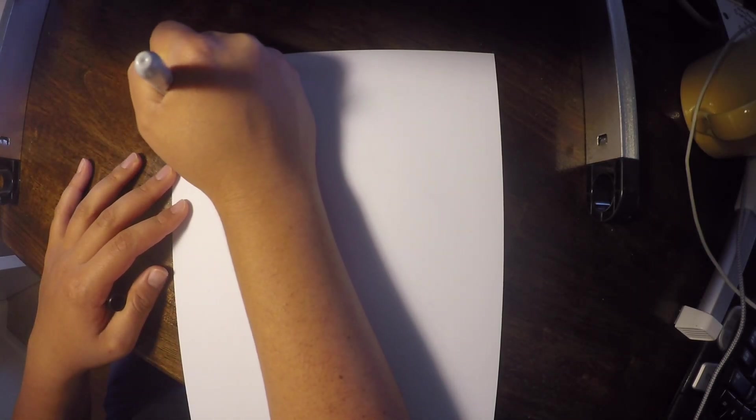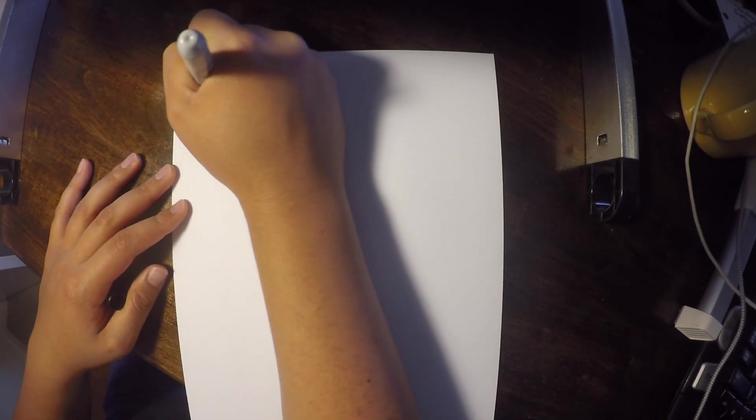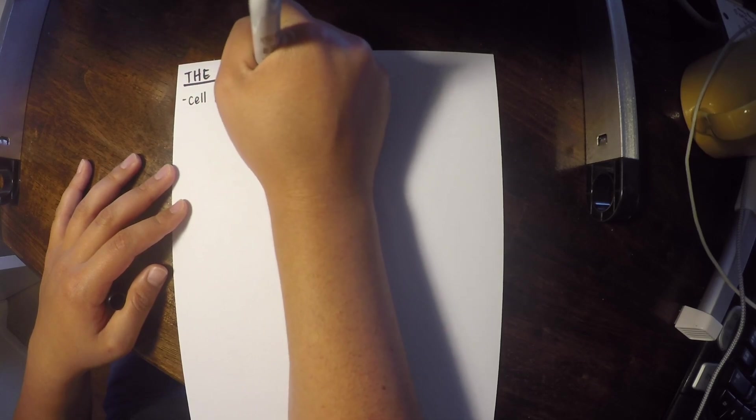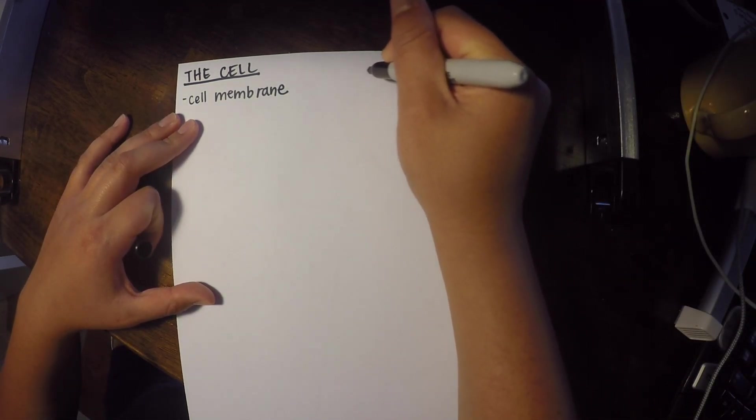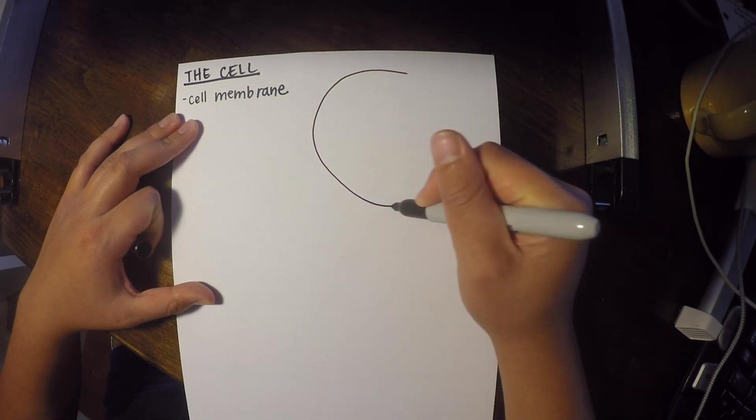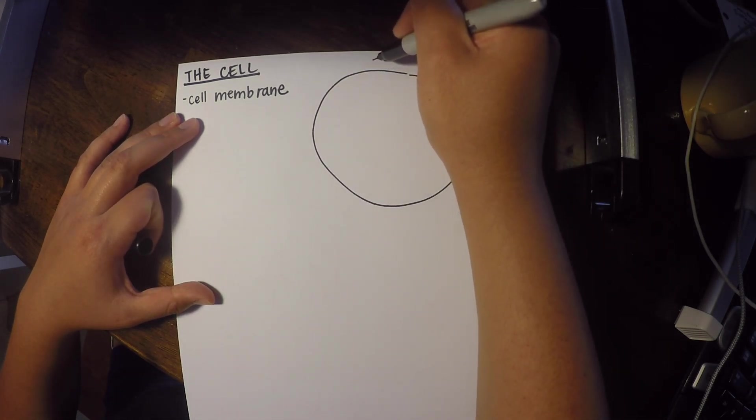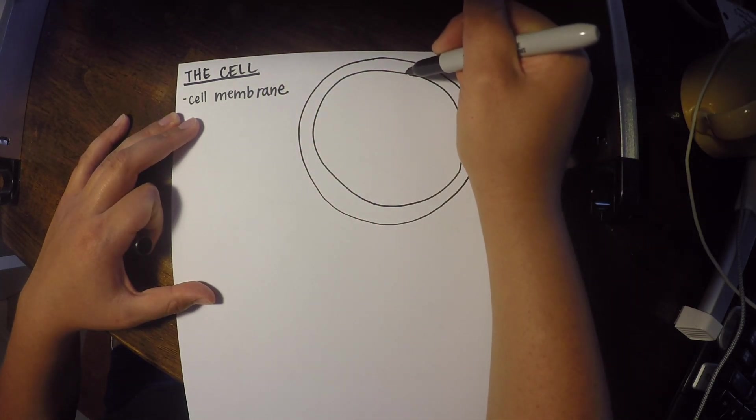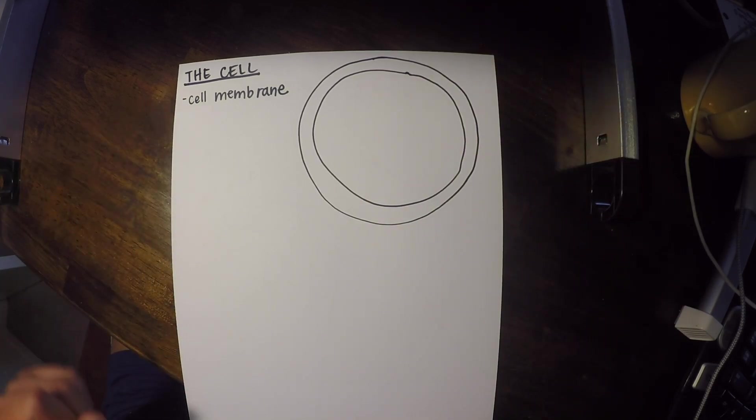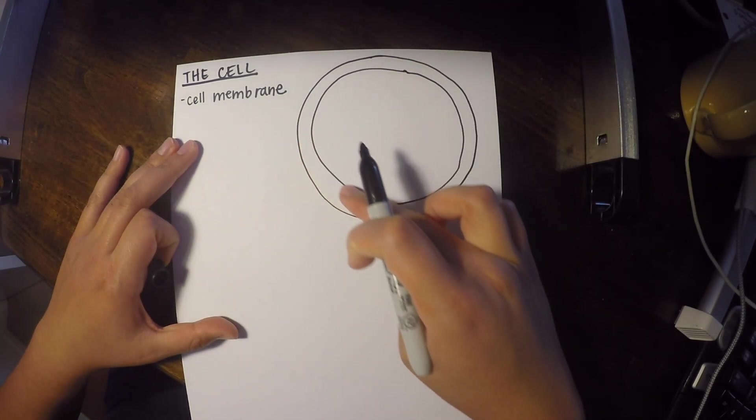So for this cell, I'm first going to review the cell membrane. And what I'm actually going to do is I'm going to draw a big cell right here. It's going to be just a big circle. So that's our cell, and this outer part is our cell membrane right here.